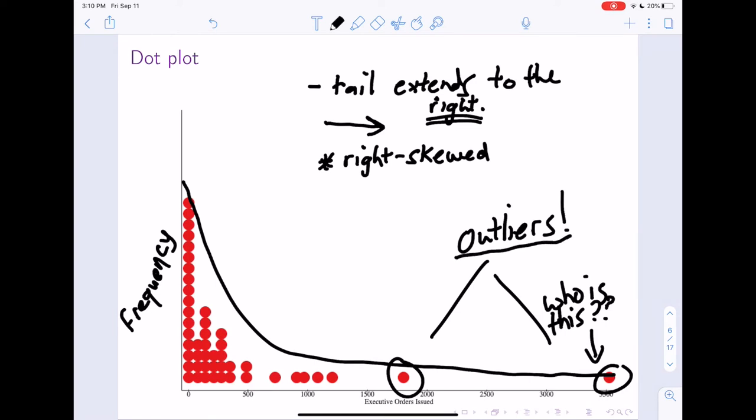And an outlier is basically an extreme value. Now, outliers don't mean that it's fake data or that it should be deleted or anything like that. It just means that these two particular data values are quite extreme and unusual relative to the others. So if I'm looking at this plot here, I'm describing it as being right skewed, and I'm describing it as having two outliers. That's how I would describe it.